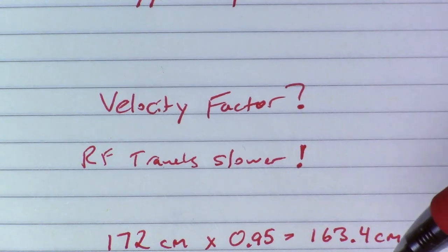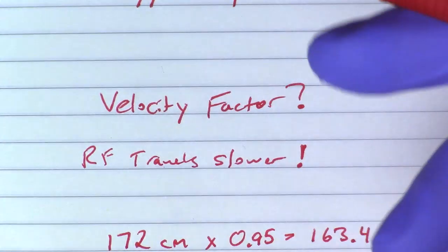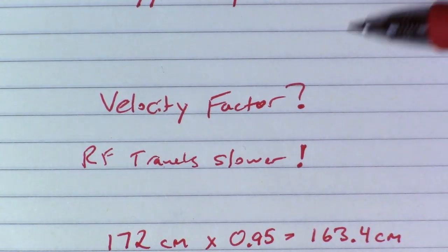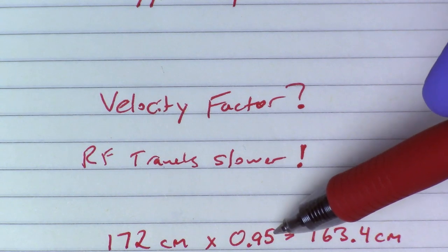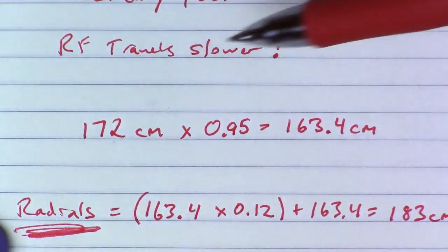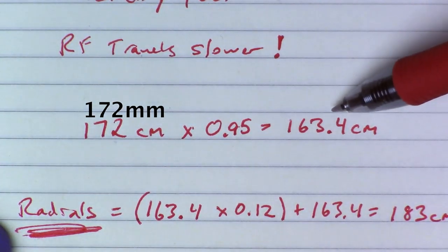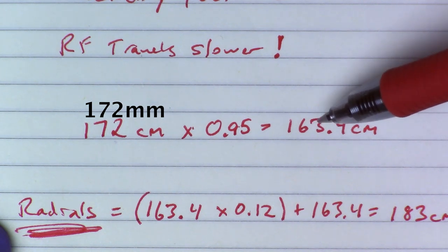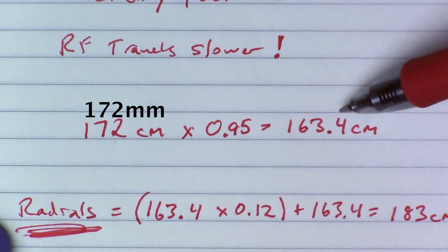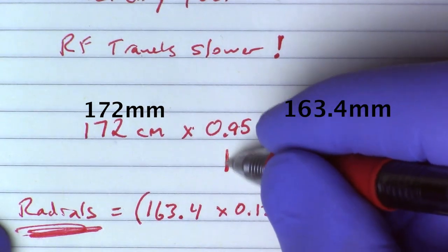If we have a wire that has an insulation on it or like coaxial cables, they have a dielectric and each different cable type has a different velocity factor. So brass, I believe is basically the same thing as copper. So we're going to take that 172 centimeters that we calculated before. We're going to multiply that by 95%. And that's going to give us an actual real world length of 163.4 centimeters for our center conductor.